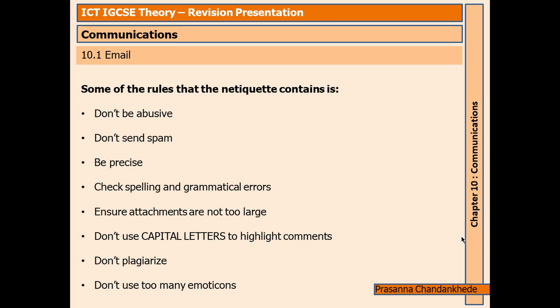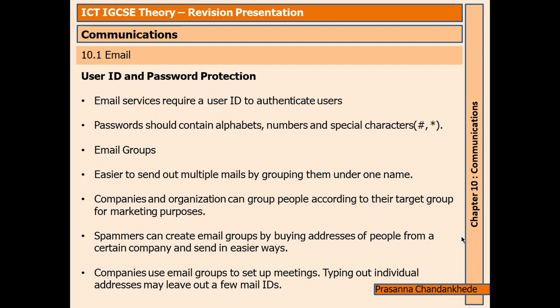Be precise on what you're talking about in the email — don't add irrelevant messages, texts, or images. For example, if you're talking to your boss about how you've been working online, don't add how your children are disturbing you. Check spelling and grammatical errors — you can also use Grammarly, not sponsored though. Ensure attachments are not too large, as sometimes large attachments won't be sent. Don't use capital letters to highlight comments, don't plagiarize, and don't use too many emoticons. Keep it formal.